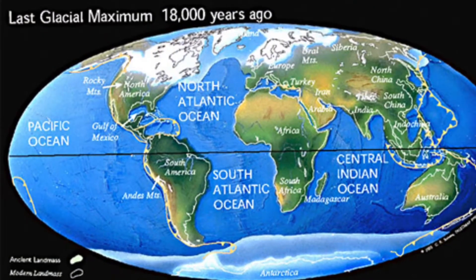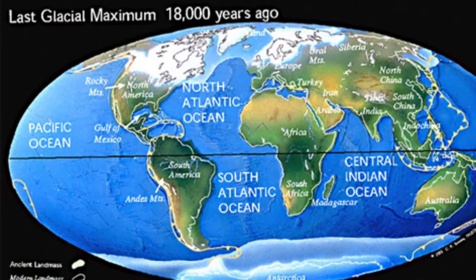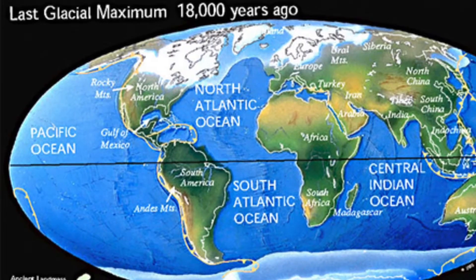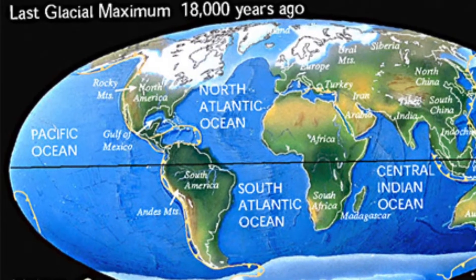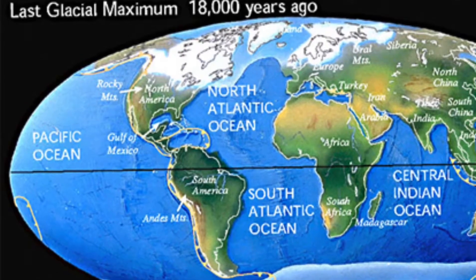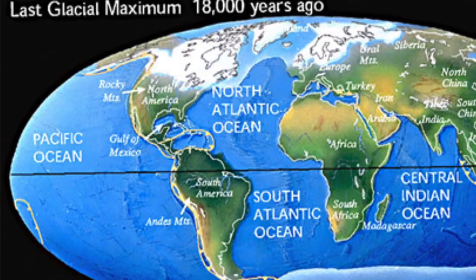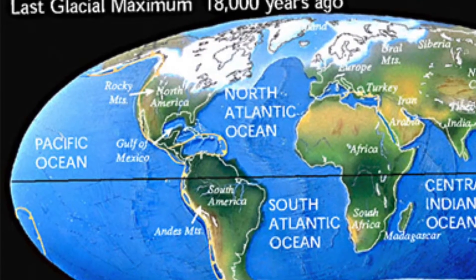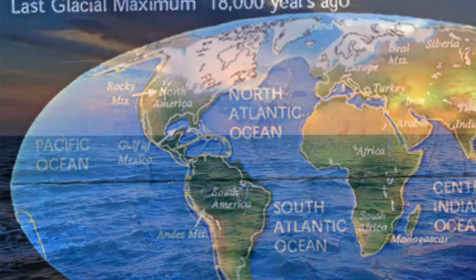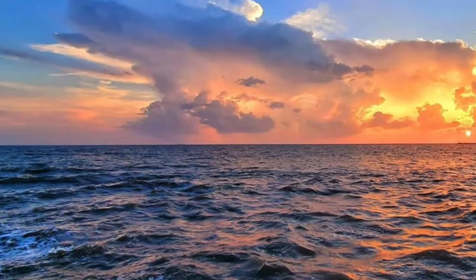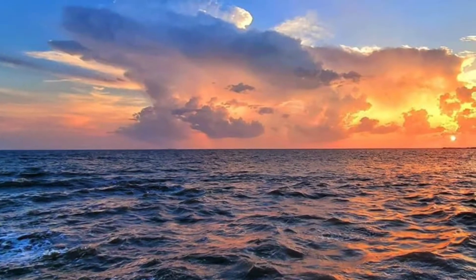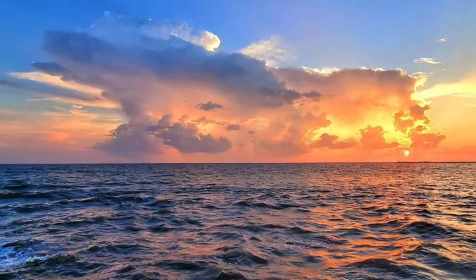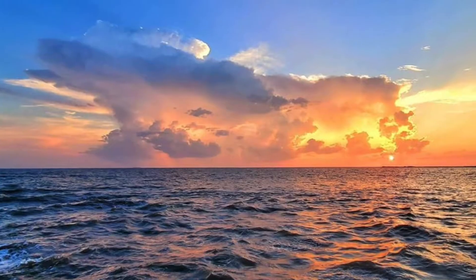During the last ice age, so much water was locked up in the ice sheets that sea level was about 400 feet lower than it is today. When the glacial sheets started to melt, sea level rose, and coastal and low-lying areas worldwide became flooded with seawater.